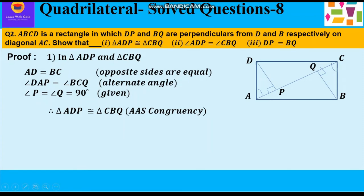Since we have proved that triangle ADP is congruent to triangle CBQ, we can say that their corresponding parts are also equal. This is the property of congruent triangles. Whenever the two triangles are congruent, we can say that their corresponding parts are also equal.